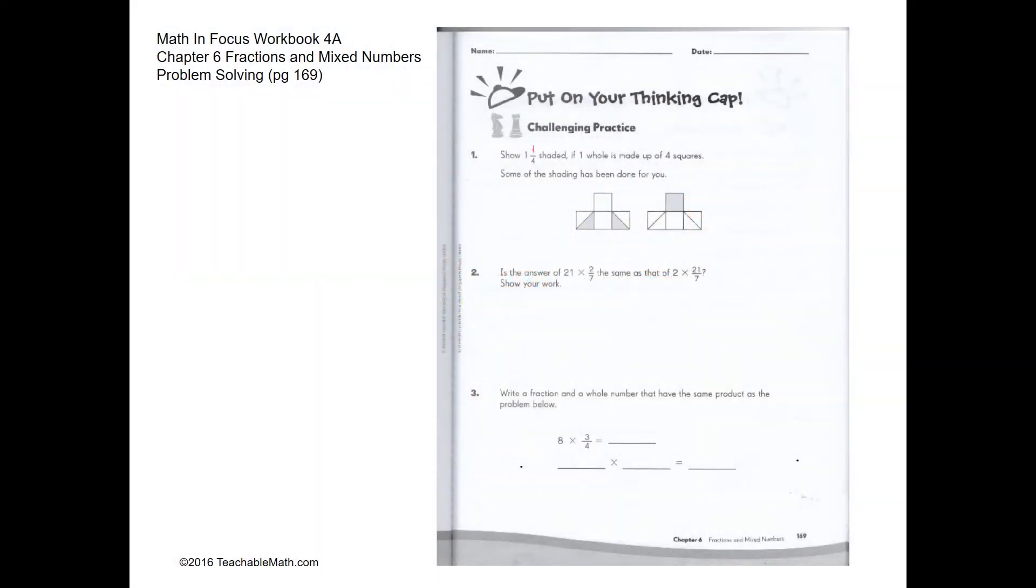Challenging practice. Show one and one-fourth. If one hole is made up of four squares, so this will be one hole and this would be one hole.